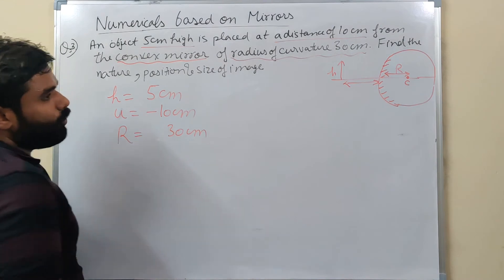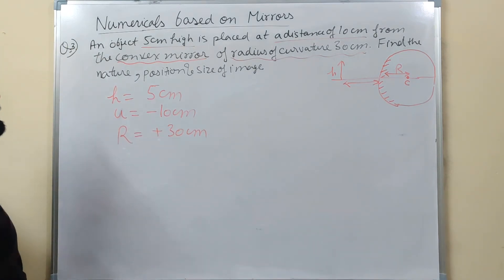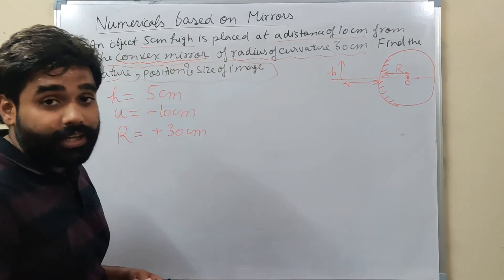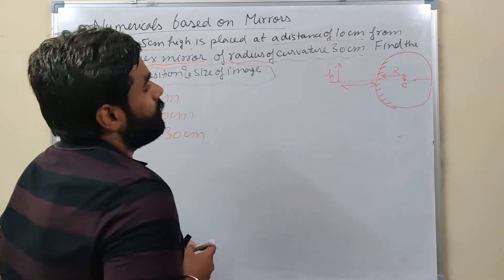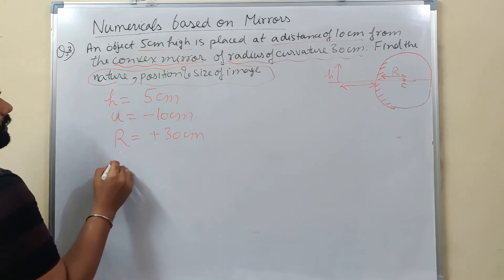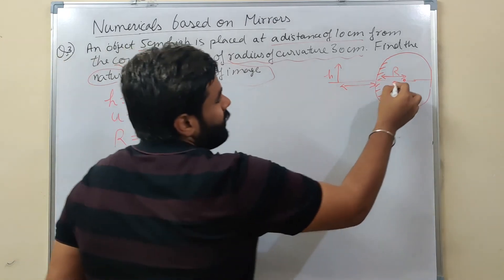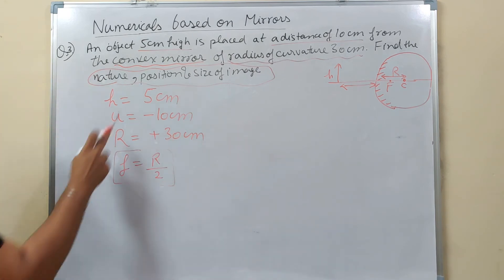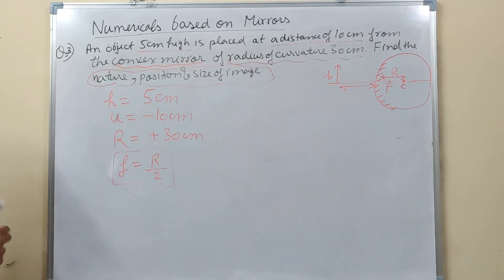Find the nature, position and size of image. Now the formula: focal length = radius of curvature / 2. So f = 30/2 = 15 cm. This is positive because for a convex mirror the focal length is on the right side. So f = +15 cm. Now we have u and f, we can find position using mirror formula.